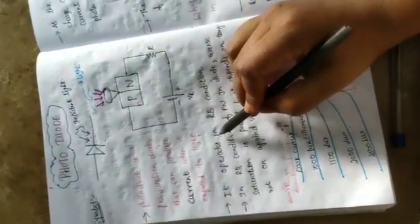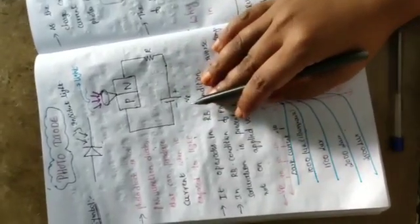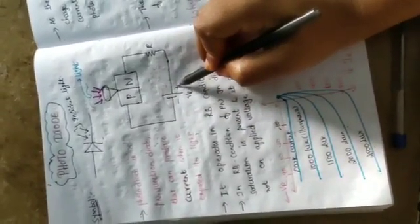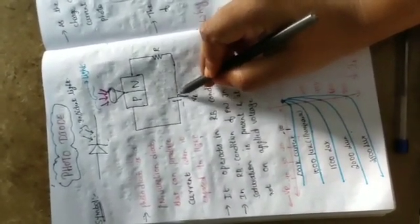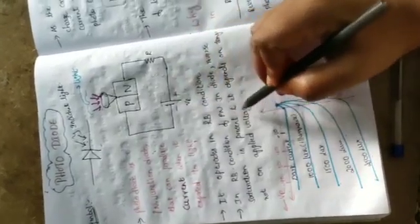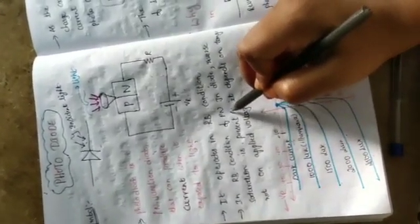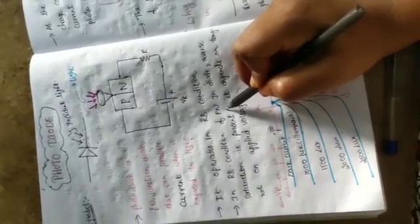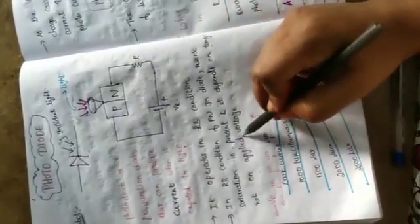The photodiode should operate in reverse bias condition only. In reverse bias condition, only one current is present: the reverse saturation current. This current is due to the minority charge carriers, and those minority charge carriers depend on temperature. In reverse bias condition, reverse saturation current depends on temperature, not on the applied reverse voltage.